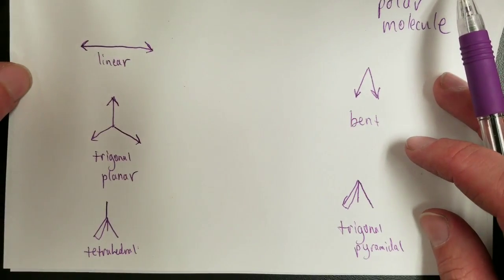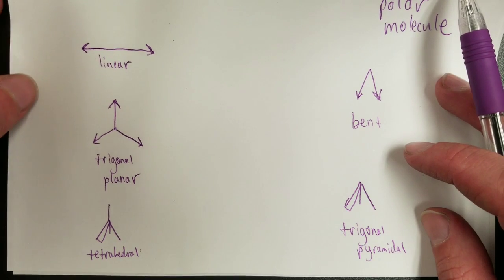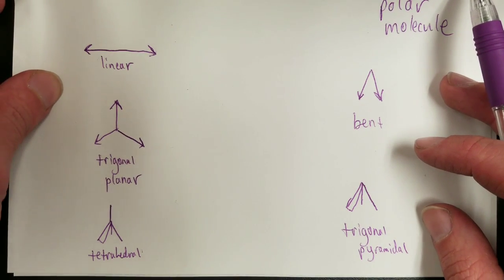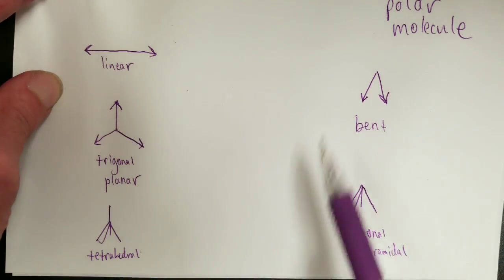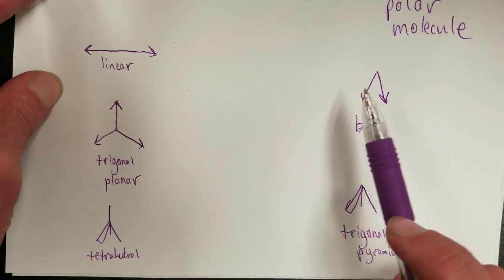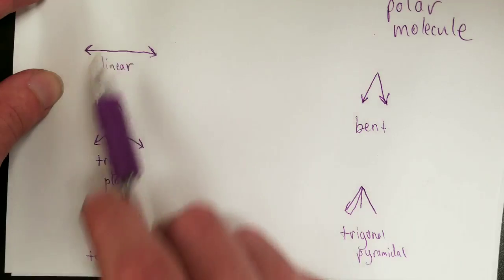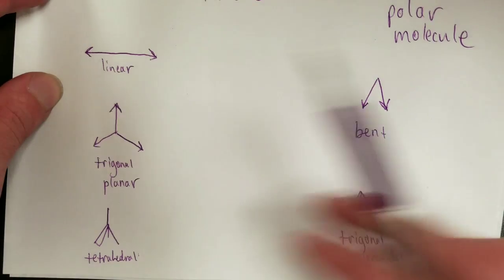These are really the only five shapes we cover in this class, so this really covers the only possibilities. If these all have polar bonds, these molecules will be non-polar. These molecules will be polar because they fail to cancel out. These will be non-polar because they successfully cancel out.